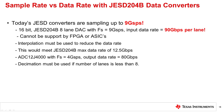Many of the JESD DACs have several options to choose from regarding the interpolation factor. This allows the user options when choosing how many SERDES lanes they will need and how fast these will operate. This is not as much a problem with current JESD204B ADC converters, as they are not sampling as fast. But if the user would like to reduce the number of lanes, then decimation would be required.